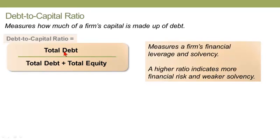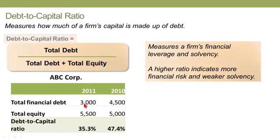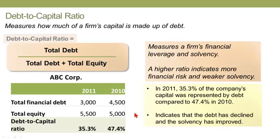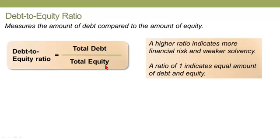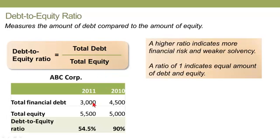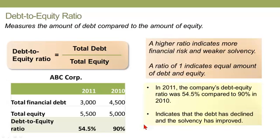Debt to capital is again balance sheet on balance sheet, with total debt in the numerator, but this time compared to capital. For ABC Corp, it's 3,000 debt and equity of 5,500, so we divide 3,000 by 8,500 — the sum of debt plus equity — giving a debt to capital of 35.3%. Similarly, it's coming down, indicating debt has declined and solvency has improved. Debt to equity has just equity in the denominator: 3,000 divided by 5,500 gives 54.5%, which relative to the previous year is also coming down, so we can make a similar statement that solvency has improved.